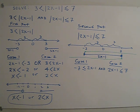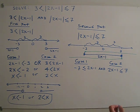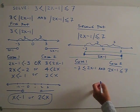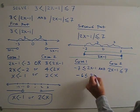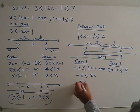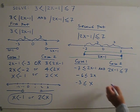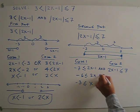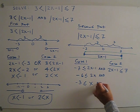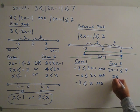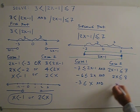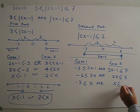The two regions intersect each other, which is the reason we use 'and' instead of 'or'. If I solve case 1, I get x greater than or equal to negative 3. For case 2, 2x goes to positive 8, so x will be less than or equal to 4.